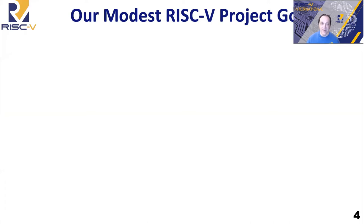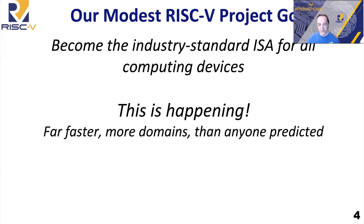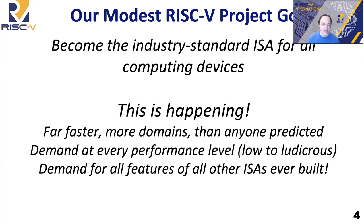RISC-V has come a long way. We used to joke about the project goal, but it's sort of become more real. We want to become the industry-standard ISA for all computing devices, and it's kind of happening — much faster across more domains than anybody really predicted. There is demand for every performance level, from tiny energy-harvesting microcontrollers all the way up to supercomputer performance, and really a demand for every feature that's ever been put in any ISA. This is really a function of success — people want to use RISC-V.